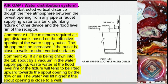Air cap, water distribution system: the unobstructed vertical distance to the free atmosphere between the lowest opening from any pipe or faucet supplying water to a tank, plumbing fixture, or other device and the flood level rim of the receptor. Comment one: the minimum required air gap distance is based on the effective opening of the water supply outlet; the air gap must be increased if the outlet is close to walls or other vertical surfaces. Comment two: if air is being drawn into the tub spout by a vacuum in the water supply piping, wastewater at the flood level rim of the fixture will tend to be lifted upward towards the spout opening with the flow of air; the water will lift higher if the spout opening is close to a wall.